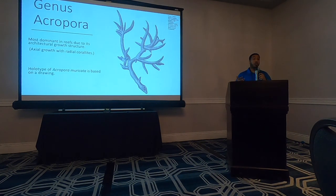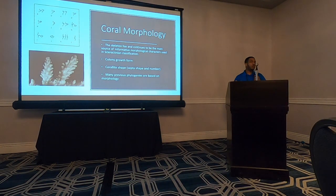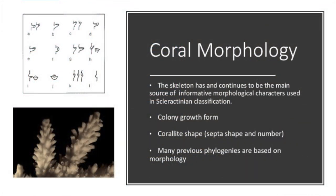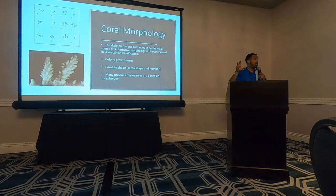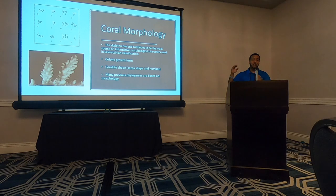The way that corals grow tells us a lot about what type of coral they are. The shape of these tiny structures called coralites is really informative in helping scientists distinguish between different species that are very similar. Many of the previous phylogenetic trees are based on these morphological characters — a lot of the museum trees and textbooks are based on looking at these physical characteristics.